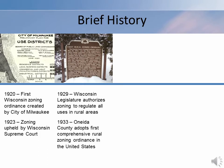Zoning was originally applied in urban areas to protect single-family residences from incompatible uses, such as factories and commercial establishments. However, Wisconsin was the first state to authorize the use of zoning in rural areas.